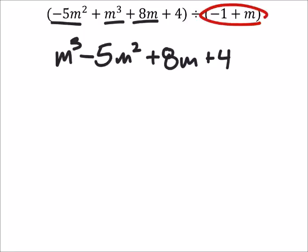And then this divisor here we could change into, it's still a positive m, but then would make that a -1. So in the box, we'll put a positive 1, because it's the opposite of a -1.